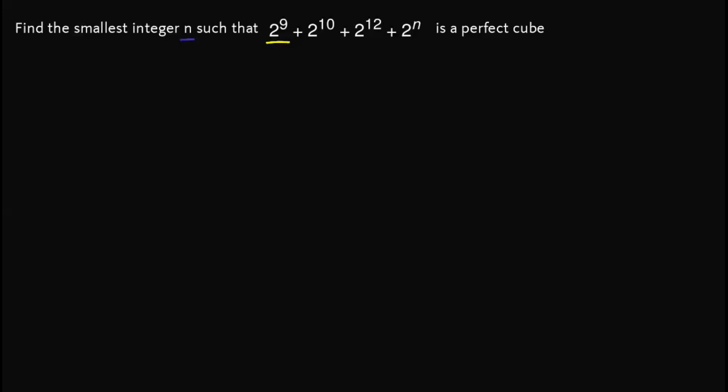But before that, we first note that we can actually write 2^10 as 2^9 times 2, 2^12 as 2^9 times 2^3, and 2^n as 2^9 times 2^(n-9). So we can do this since there is a law on exponents that states that to simplify this, we simply add their exponents.